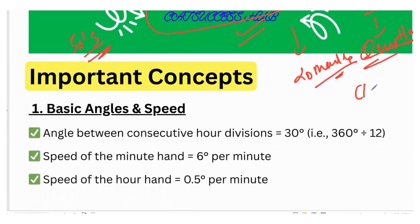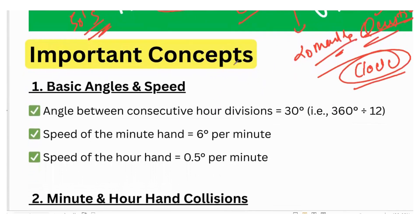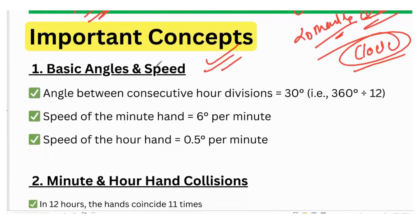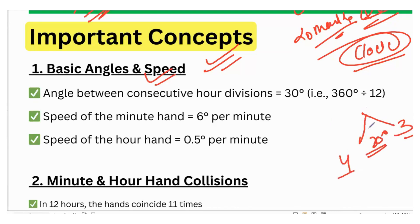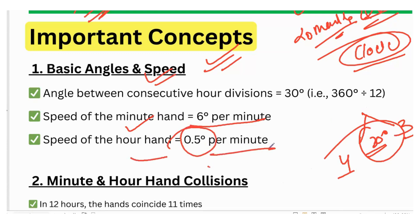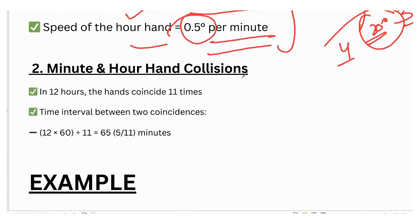Let's start the series with the first topic: clock. Just quickly understand — you don't need to become Einstein. The important concept is basic angle and speed. The angle between consecutive hour divisions is 30 degrees. Speed of the minute hand is 6 degrees per minute, and the hour hand travels 0.5 degrees per minute. Cram it. Don't try to go deep into it.